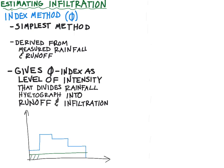What the index method does is it assumes some level of constant infiltration, so it cuts this hyetograph and it says all of this, everything under this curve, all the rainfall that falls under this curve, here's my φ-index, will become infiltration, and everything above this line will become runoff.